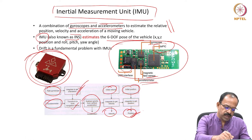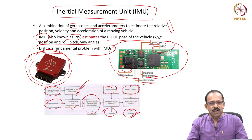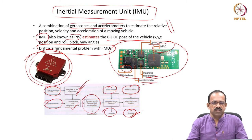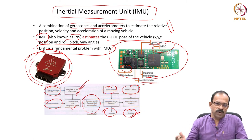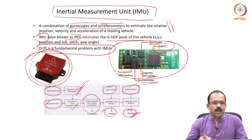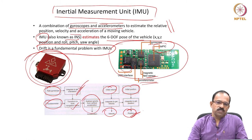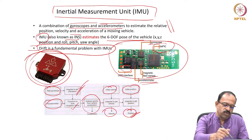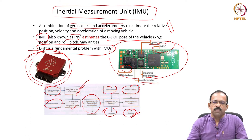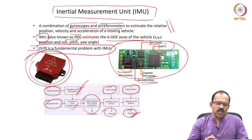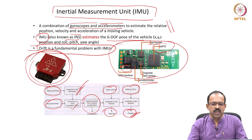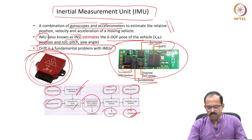Drift is a fundamental problem with IMUs, mainly because of the integration being performed. You get acceleration signals, integrate to get velocity, then integrate again to get position. Any small error in the acceleration projects as a large error in the position estimate, and this integration of errors leads to large drift. You cannot use it for very long duration measurements, but for short durations it is very good. It becomes a very basic measurement unit in any robot, though you may have to use additional sensors to correct the drift error.